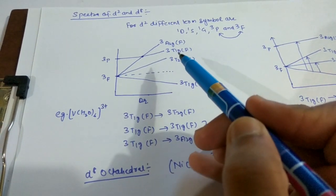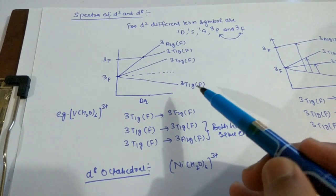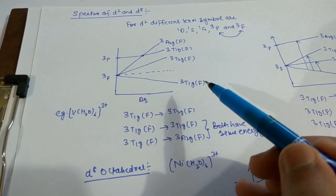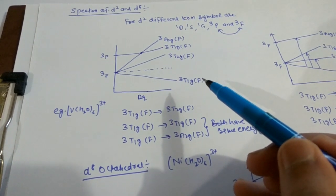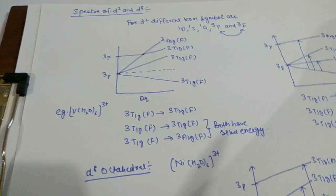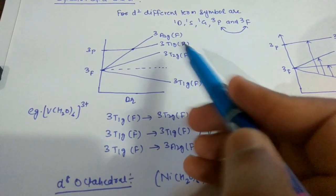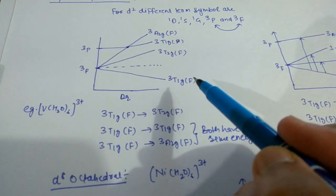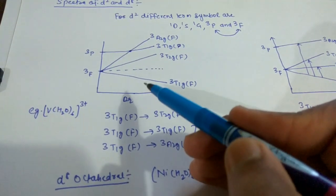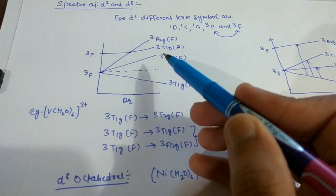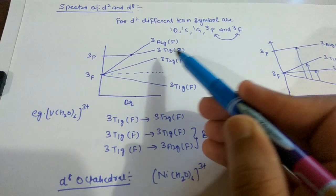The ³P state splits into ³T₁g(P). We have to write these different symbols accordingly. Here, P is for the P state and F is for the F state. This point is known as the cross point. Transition takes place from ³T₁g to ³T₂g, and from ³T₁g(F) to ³T₁g(P).